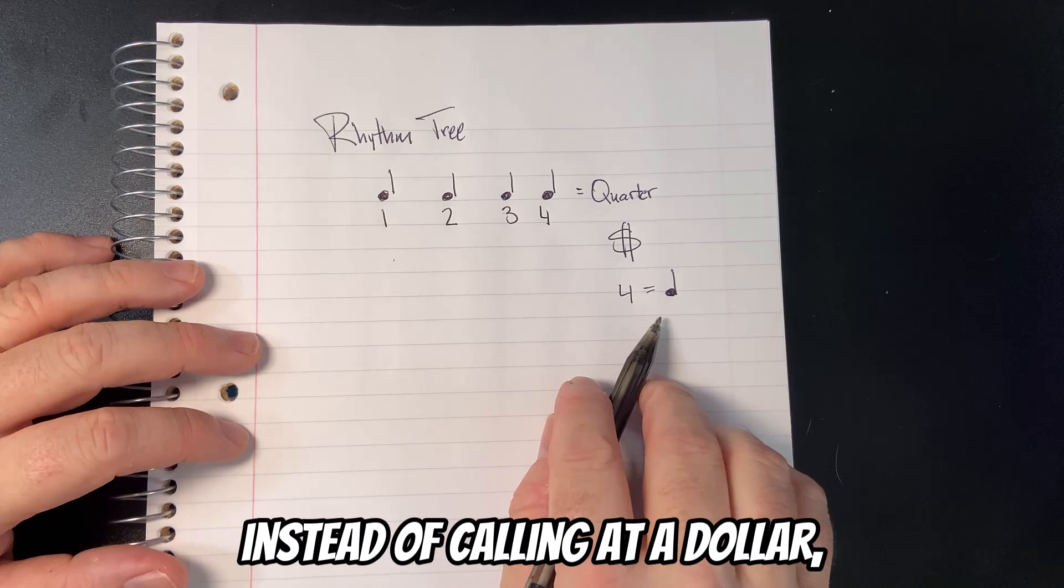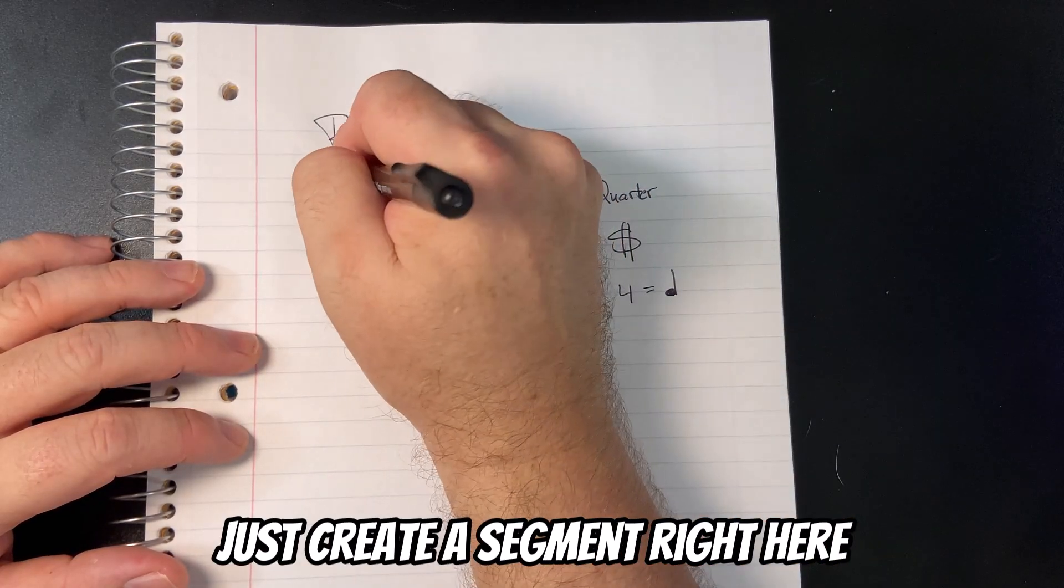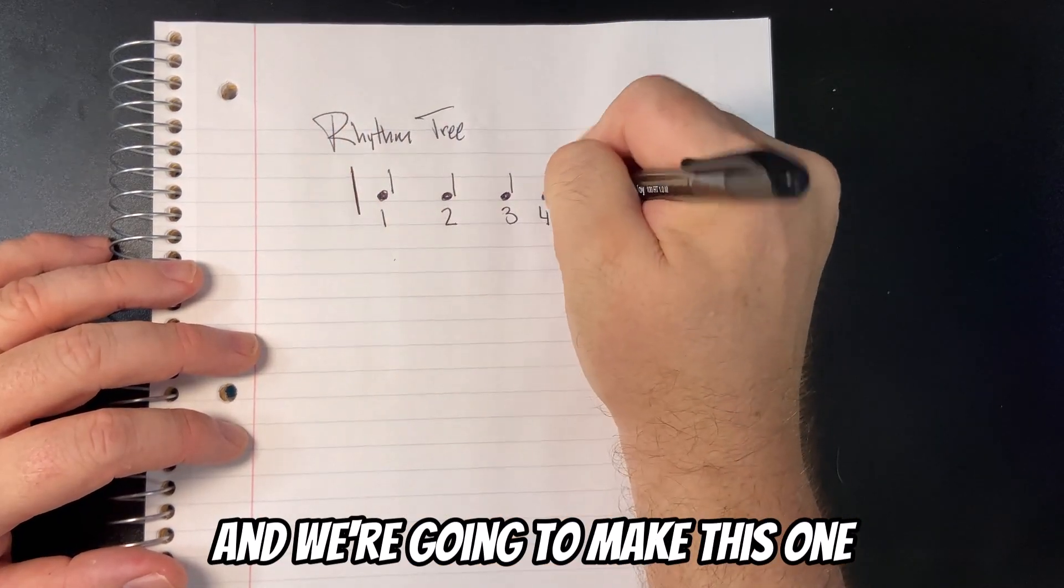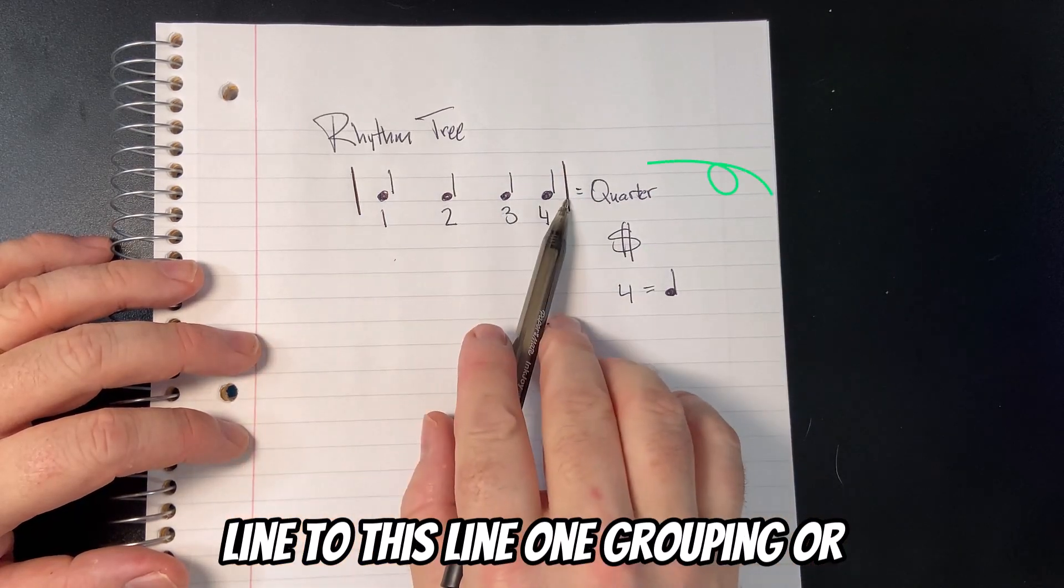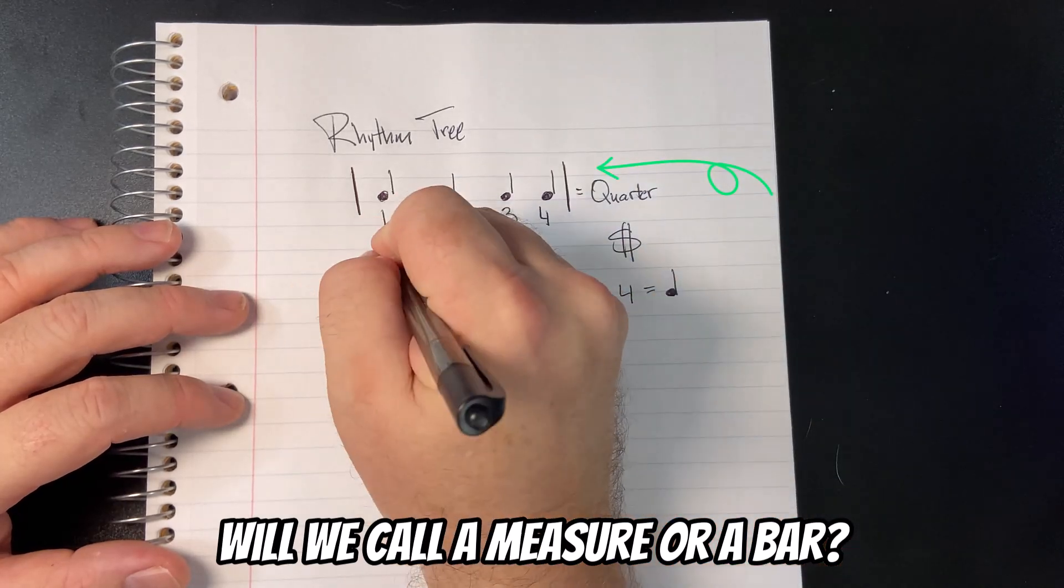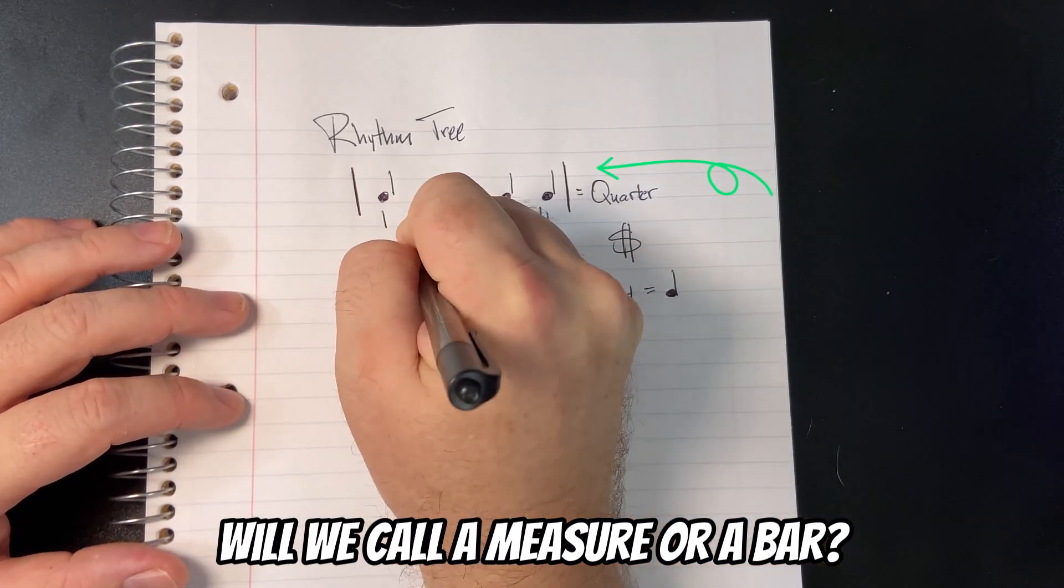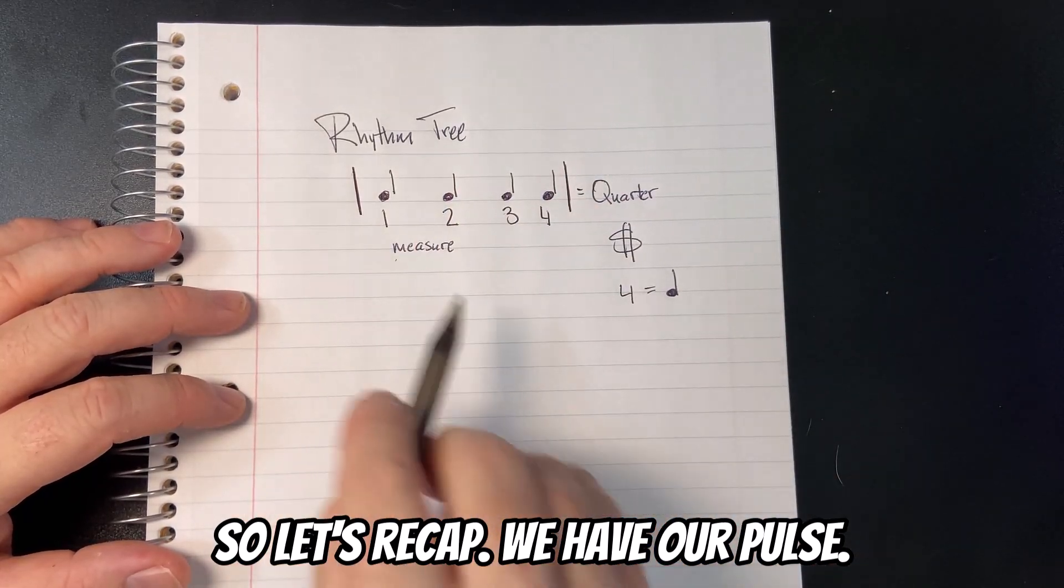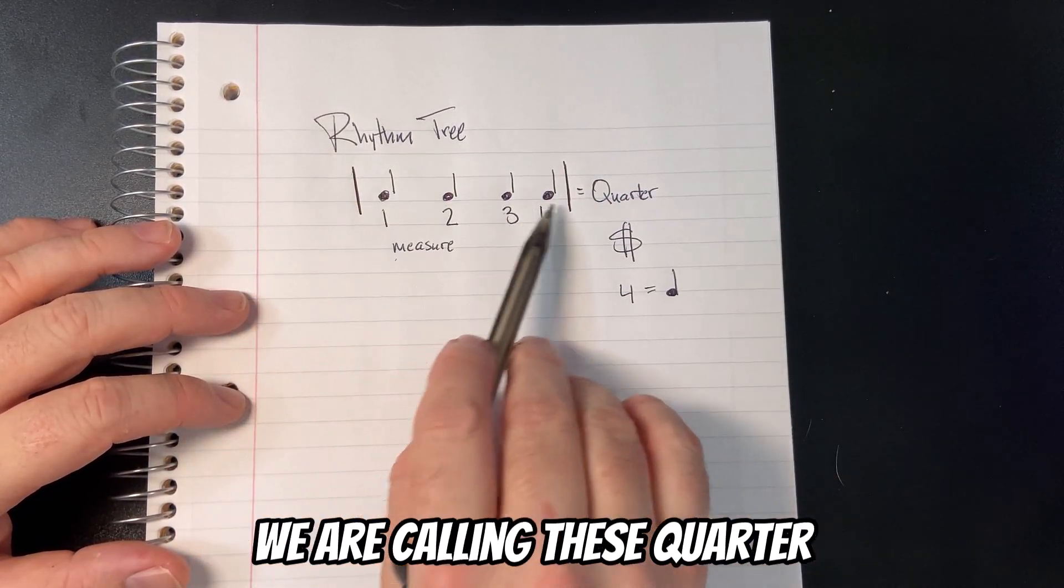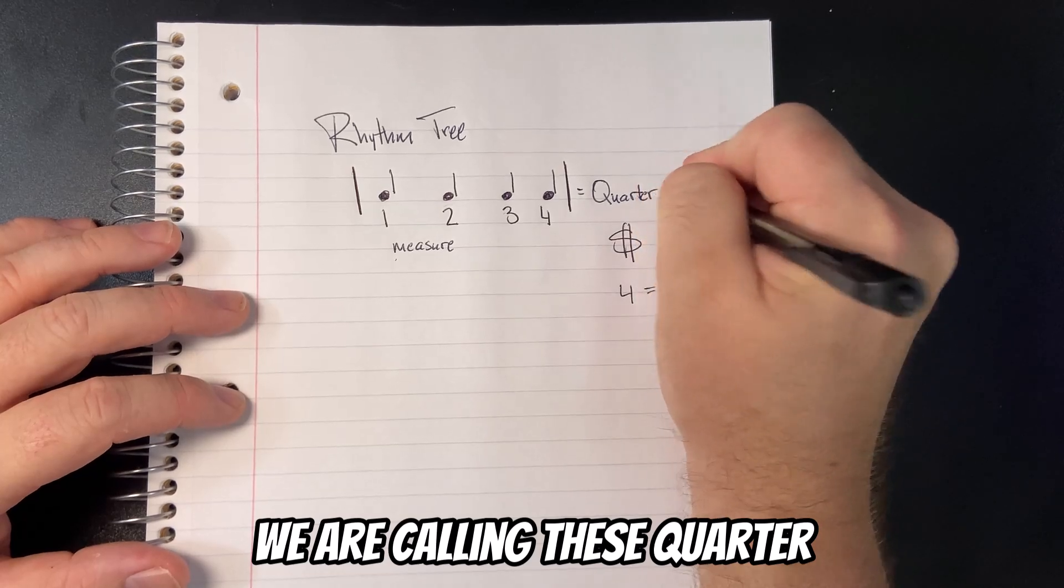We're going to just create a segment right here, and we're going to make this one line to this line one grouping, or what we call a measure or a bar.